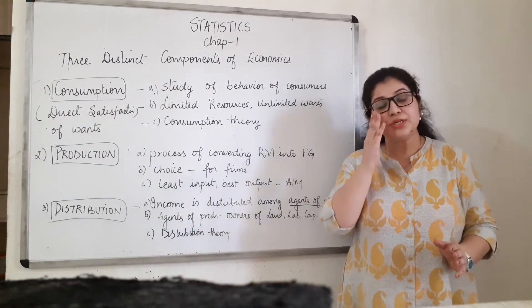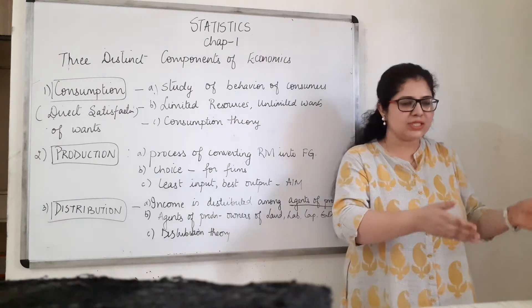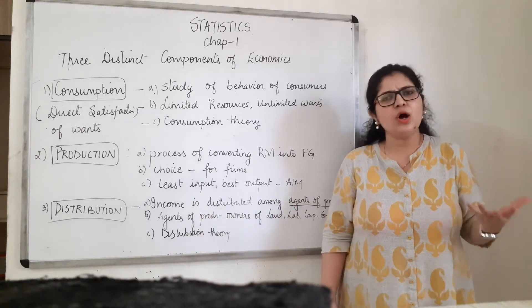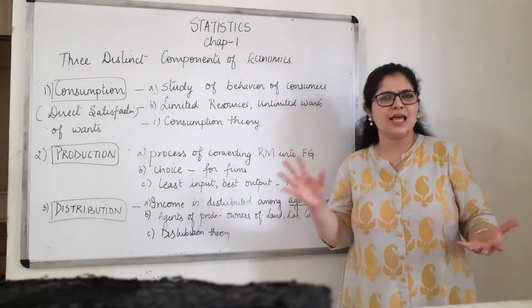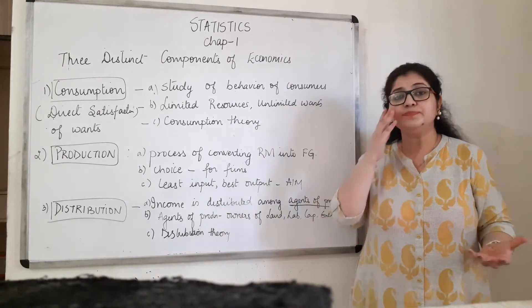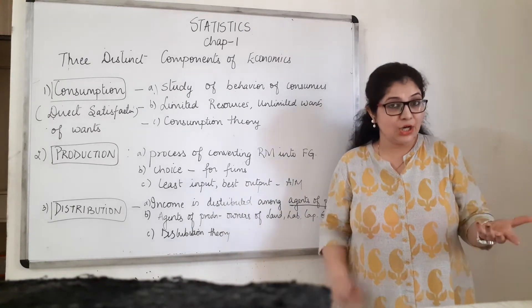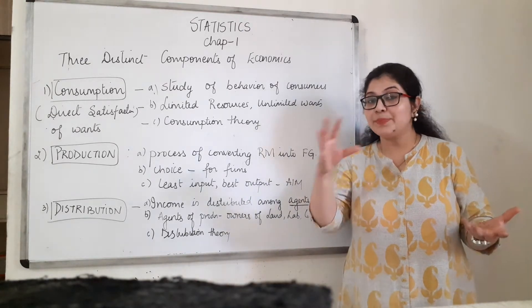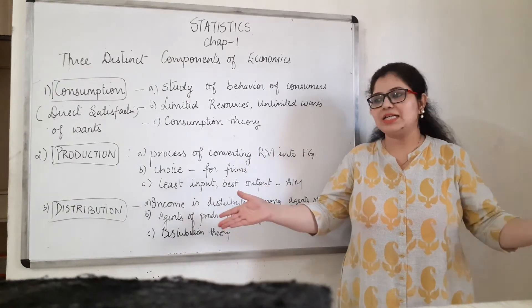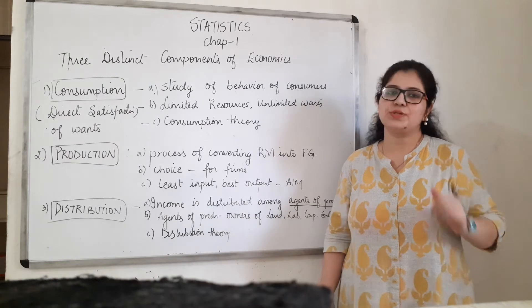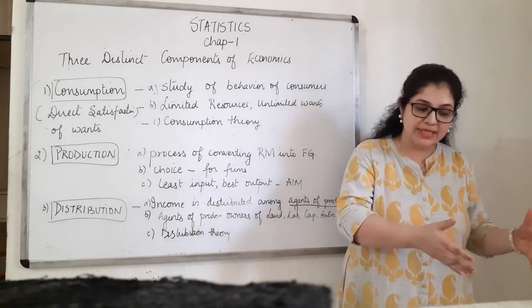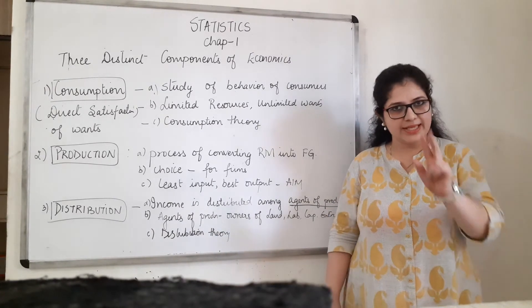The second pillar is the producer, who converts raw material into finished goods and adds value in the process. For example, taking raw material, processing it, packing it, ensuring quality, and then selling it in the market — that is who a producer is. The producer creates value through the conversion of raw material to finished goods.